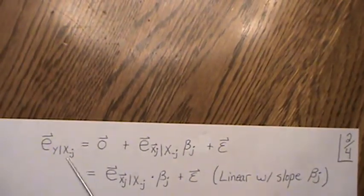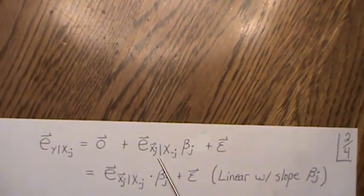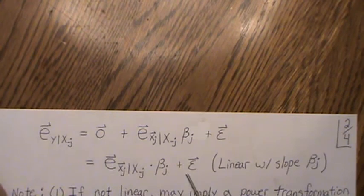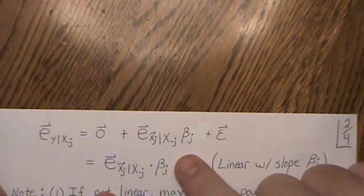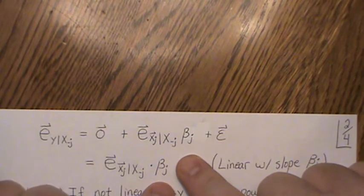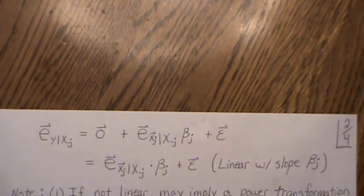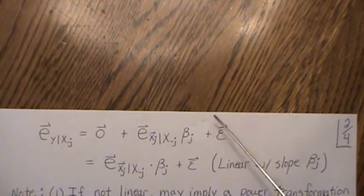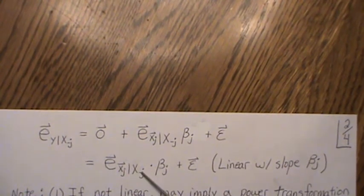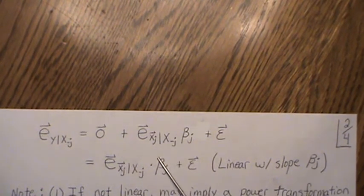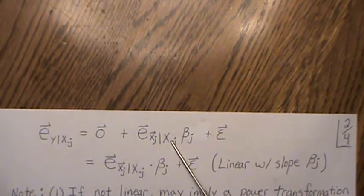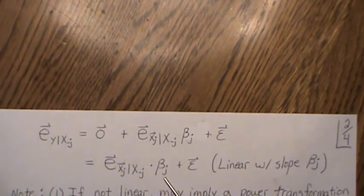What remains is: the residuals of y regressed on x_{-j} equal beta j times the residuals of xj regressed on x_{-j}, plus an error term epsilon star. This is a line through the origin with slope beta j, and the epsilon star says the data is sprinkled around that line. So in theory, finding these residuals and regressing them on each other should produce a plot with slope beta j.